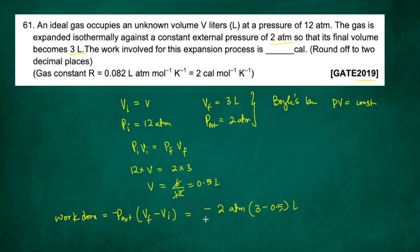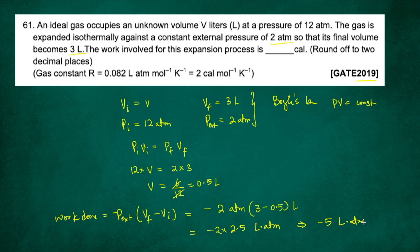Substituting values: W = −2 ATM × (3 − 0.5) liters = −2 × 2.5 = −5 liter·ATM. The answer is coming in liter·ATM, but the question asks for calories. So we need to use unit conversion to convert from liter·ATM to calories.